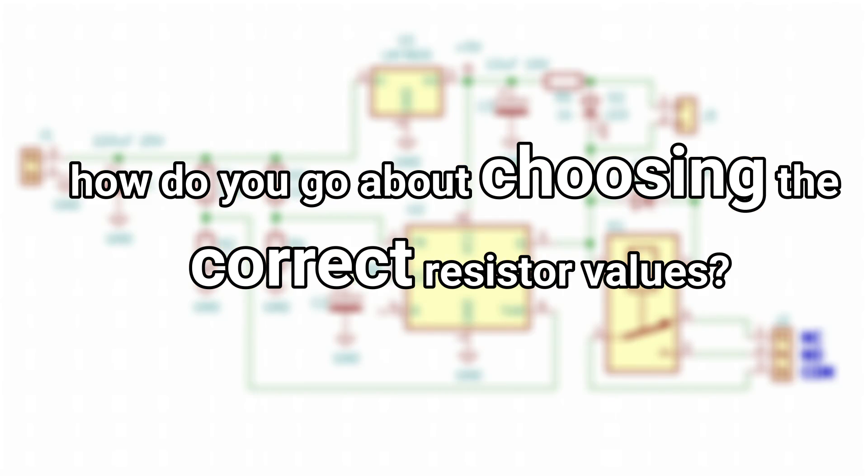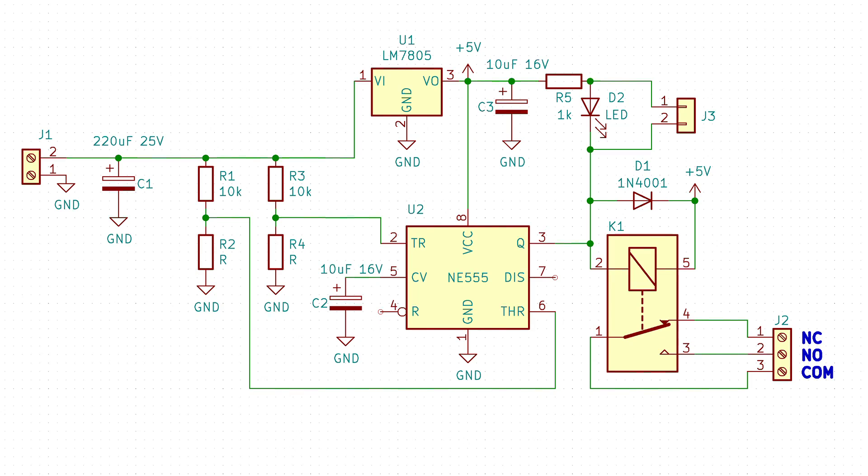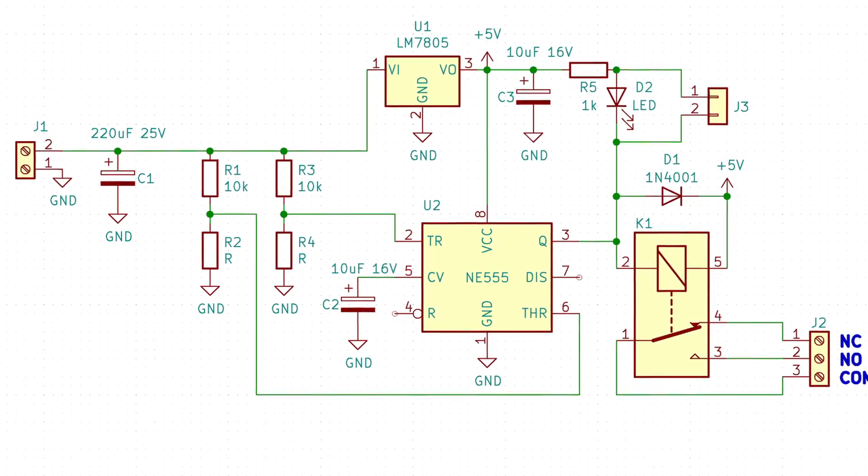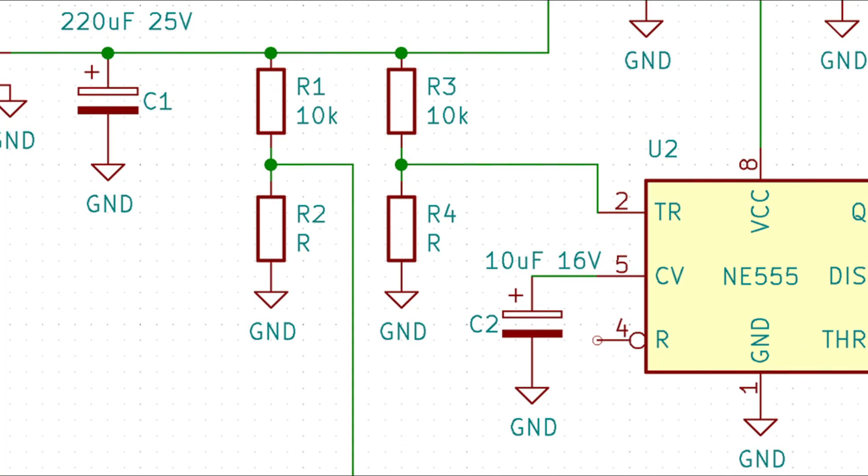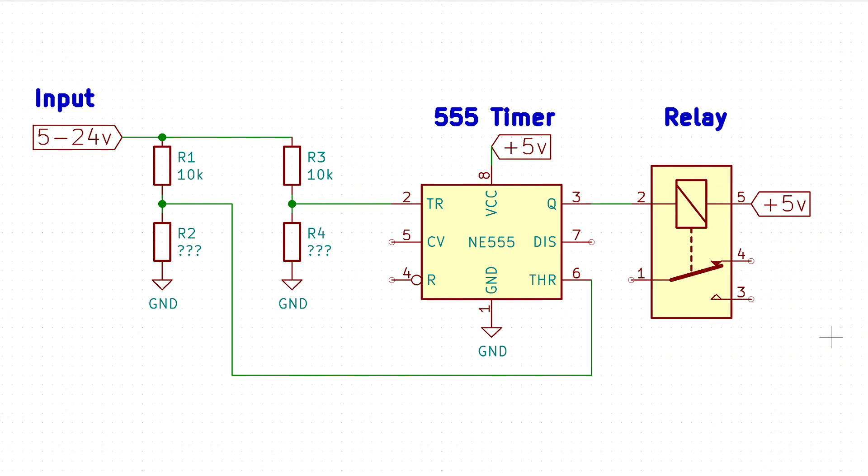Well this is a schematic that shows all the components and how they're connected to one another, but at the moment we're really only interested in resistors R2 and R4, so let's simplify the schematic to the bare essentials. Here we have our 555 timer, a pair of voltage dividers, and lastly our voltage input that will be measured by the 555 timer. So how does the circuit work?